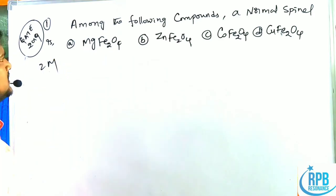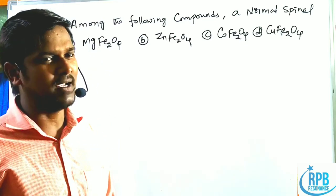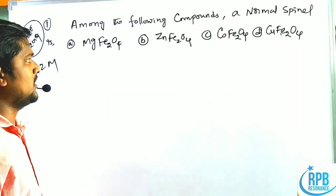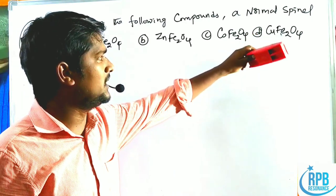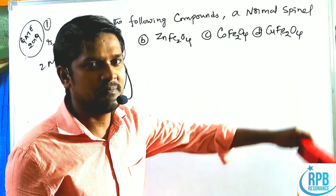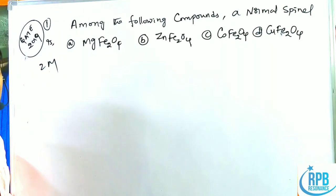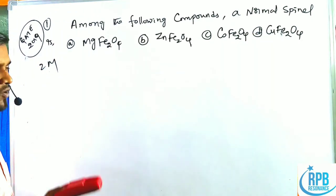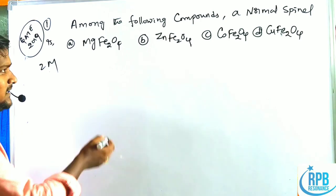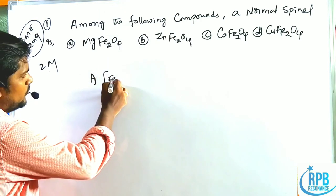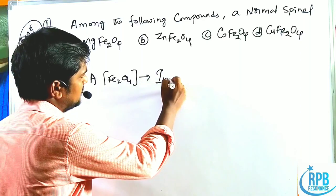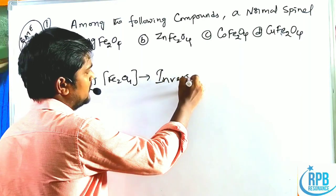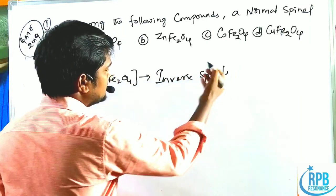The question is: among the following compounds, which is a normal spinel? The four options are MgFe₂O₄, ZnFe₂O₄, CoFe₂O₄, and CuFe₂O₄. Among these four, which is a normal spinel? As we discussed earlier, AFe₂O₄ complexes always form inverse spinels.